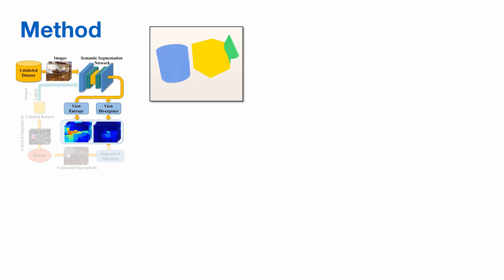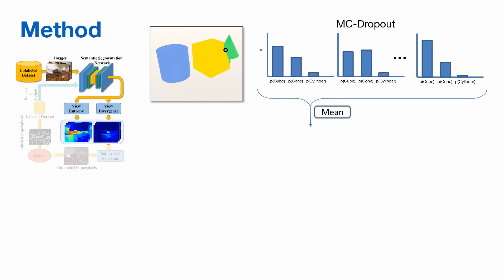To this end, we calculate for each pixel a view entropy and a view divergence score. We first use Monte Carlo Dropout to get a per-pixel probability distribution, which is helpful in estimating how confident the network is about its predictions in that view.